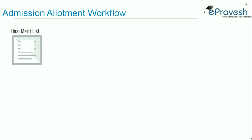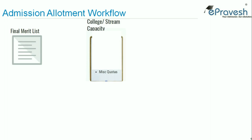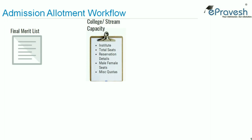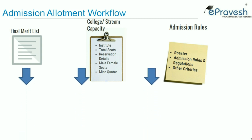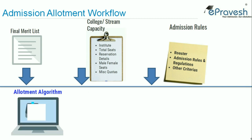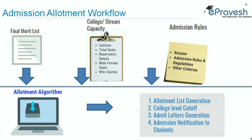Here is the simple workflow of how admission allotment is done in the system. The final merit list is used as input for the admission allotment process, along with a quota table mentioning college, stream, and seat capacity for each stream and each institute, along with quota details. Admission rules also act as input for the system. There can be exceptions and rosters to be used during the allotment process. The allotment algorithm takes all those inputs and generates admission allotments for individual students based on their preferences, ranking, and quota table.